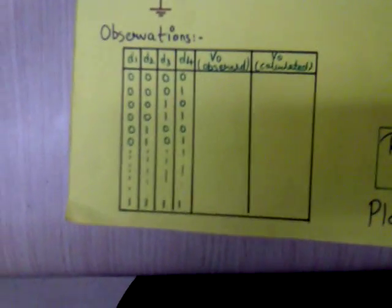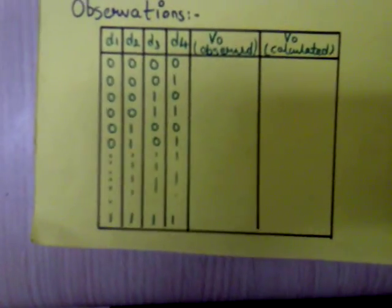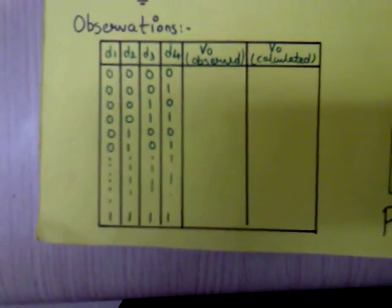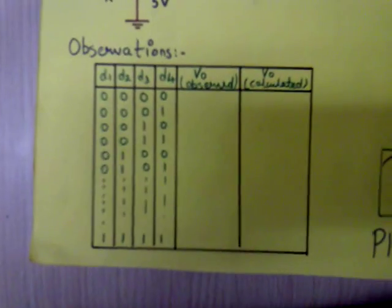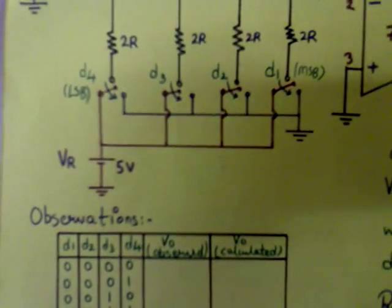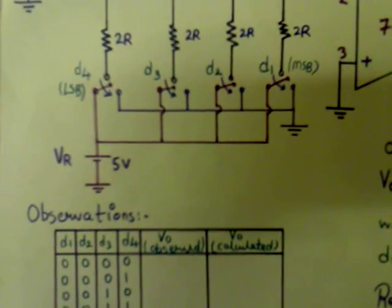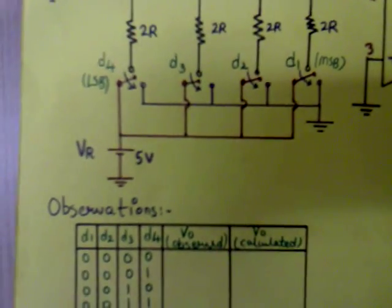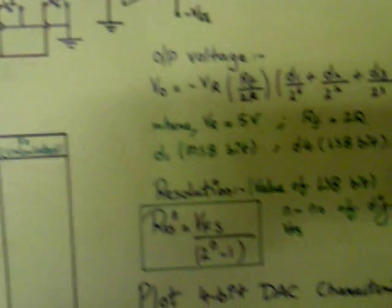We calculate the table for all the values of D1, D2, D3 from 0000 to 1111. We match the calculated table with the observed table by changing the bits from 1 to 0. D1 being the MSB bit and D4 being the LSB bit.